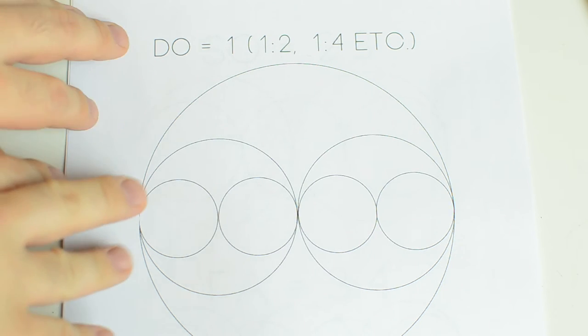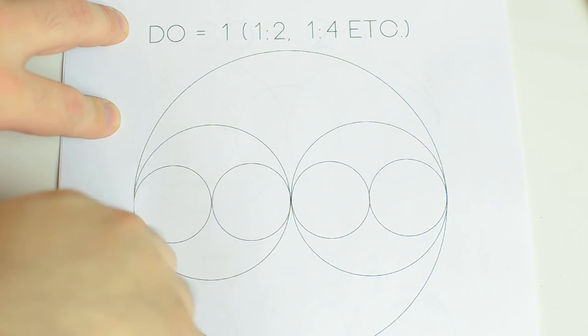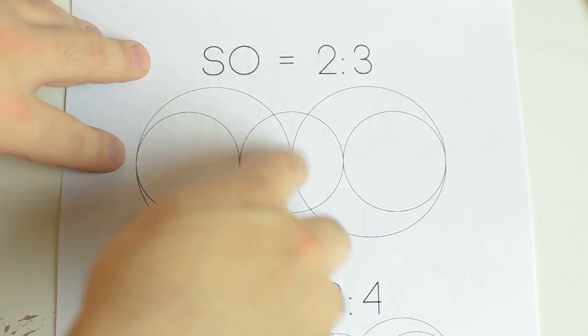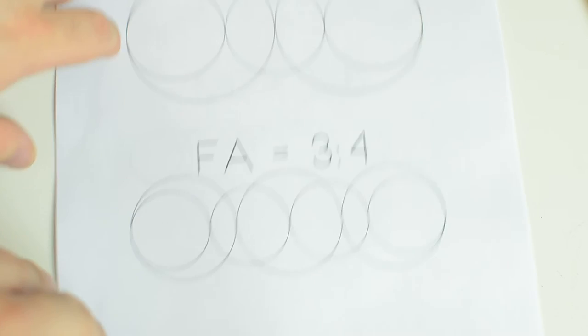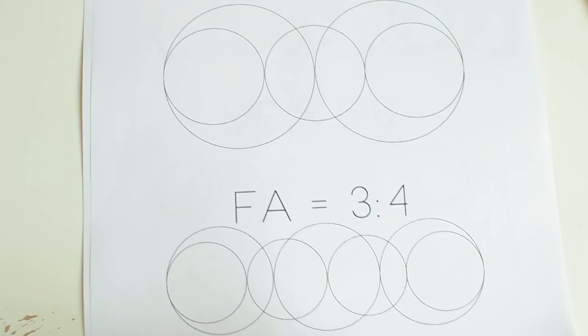To quickly review, DO is one, or a one to two ratio. SO is a two to three ratio, these are consonant still. FA is a three to four ratio, which is pretty consonant.